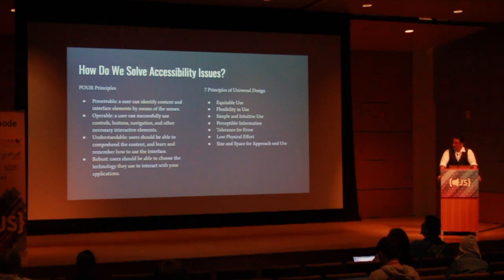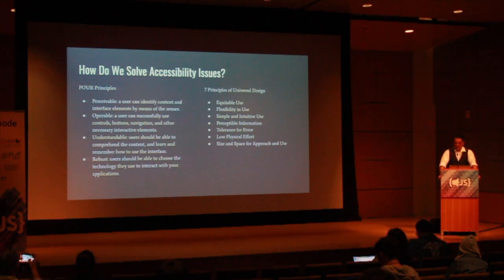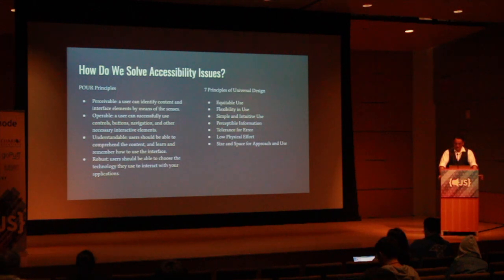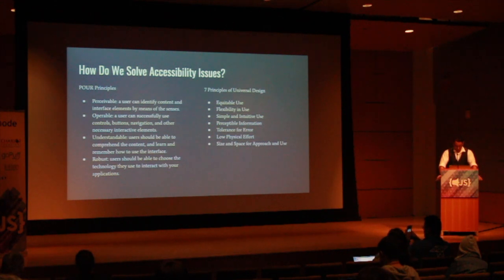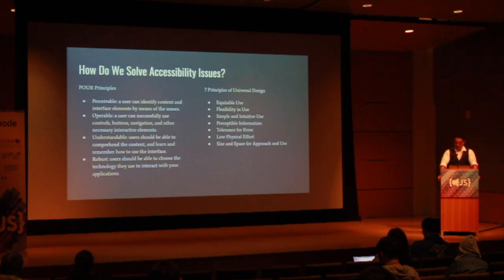How do we solve these accessibility issues? We solve them by being more aware of the individuals who will be using our applications. These are the principles behind the rules that we use to make an application accessible. We want to make sure everything is perceivable, operable, understandable, and robust.